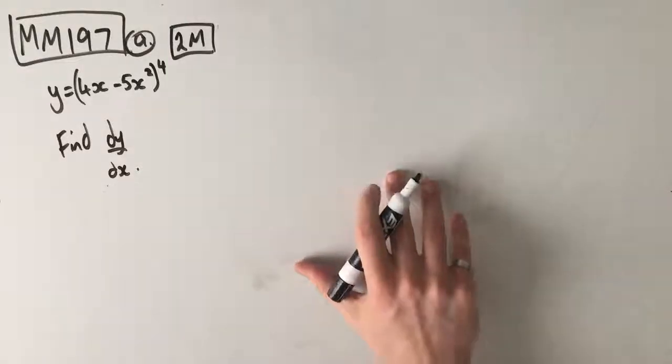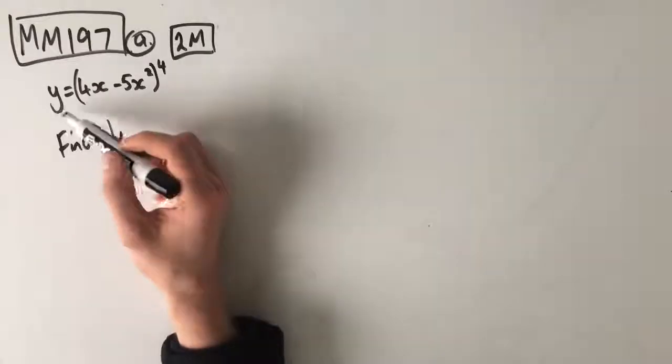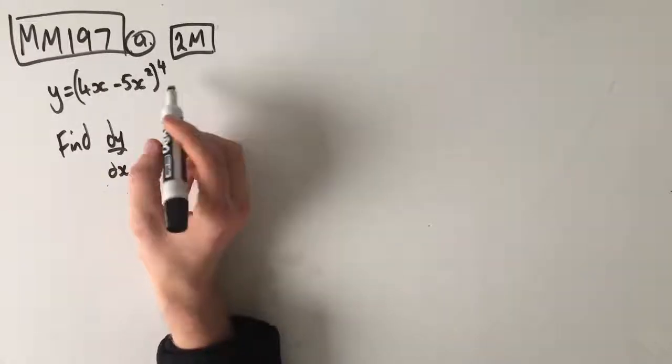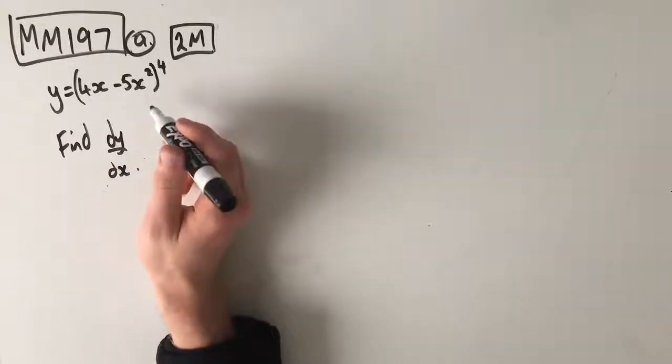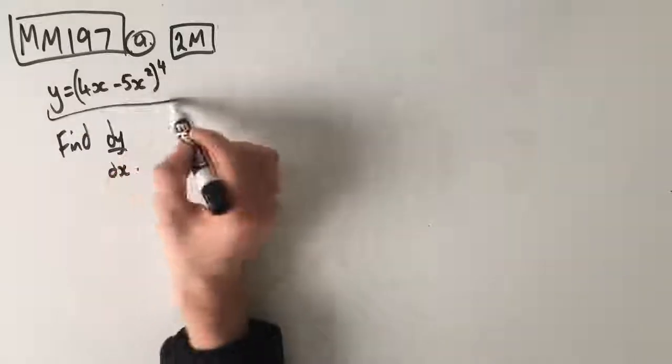Hey guys, this is question MM197 of the Maths Methods Fortify study guide. We've got this function y equals bracket 4x take 5x squared all to the power of 4 and we need to find dy dx, so the derivative of this function.